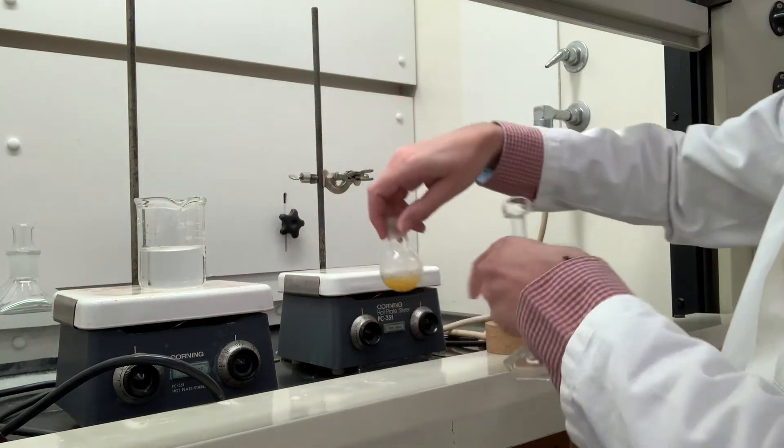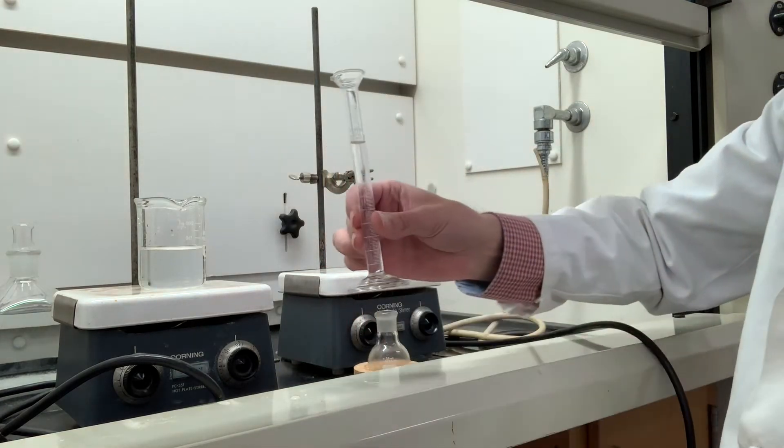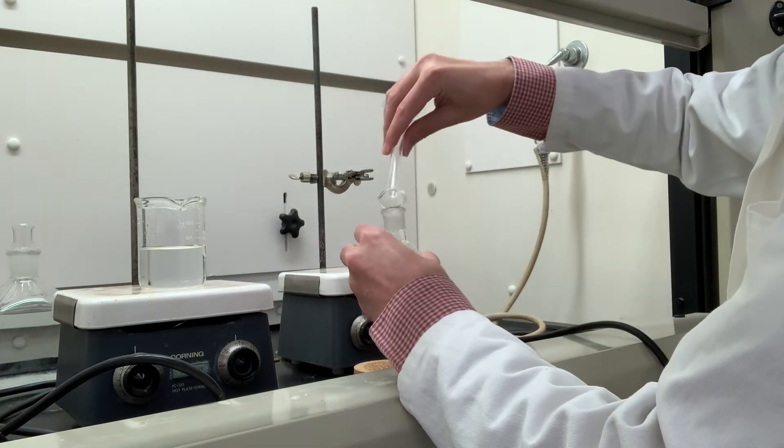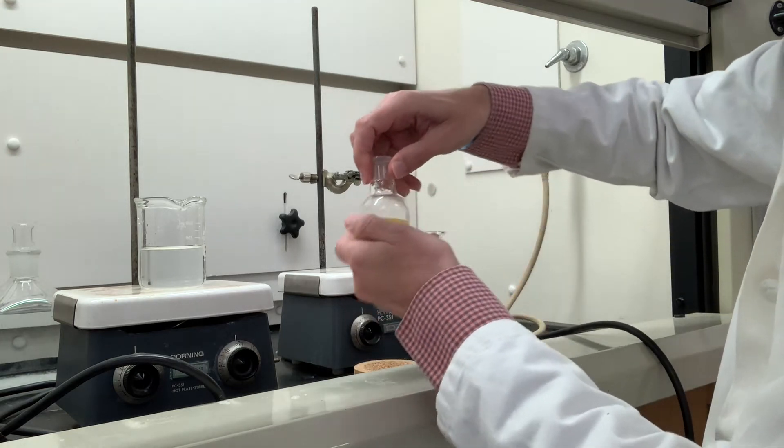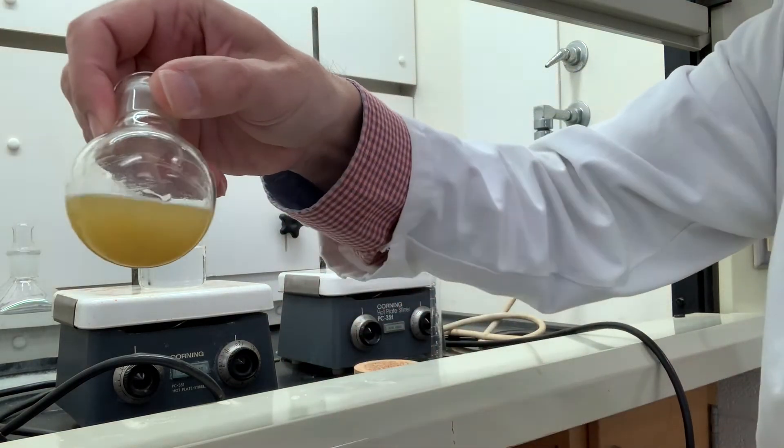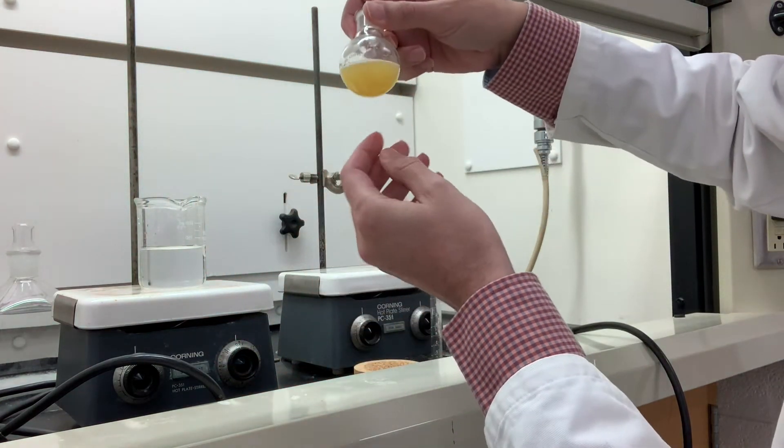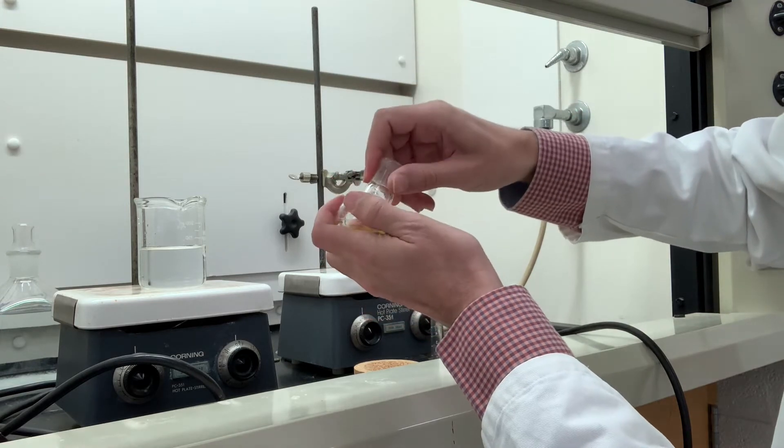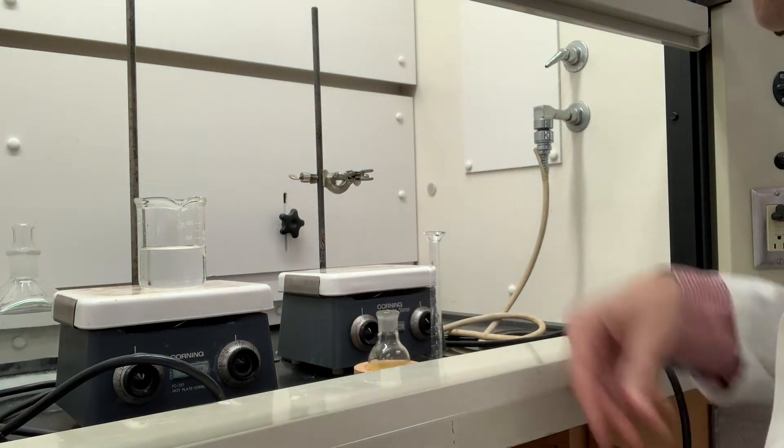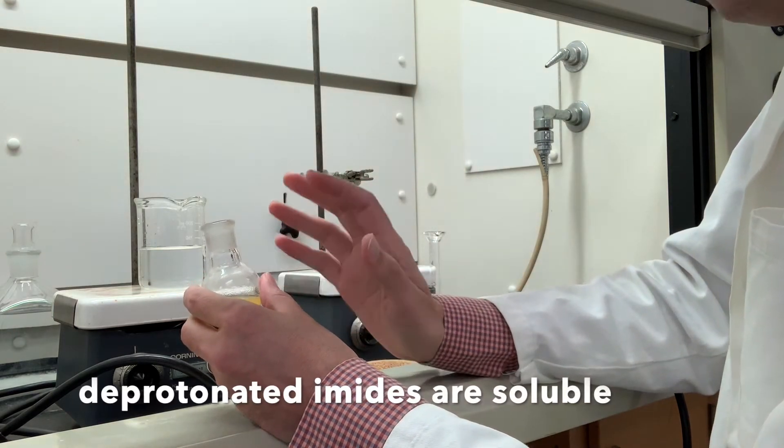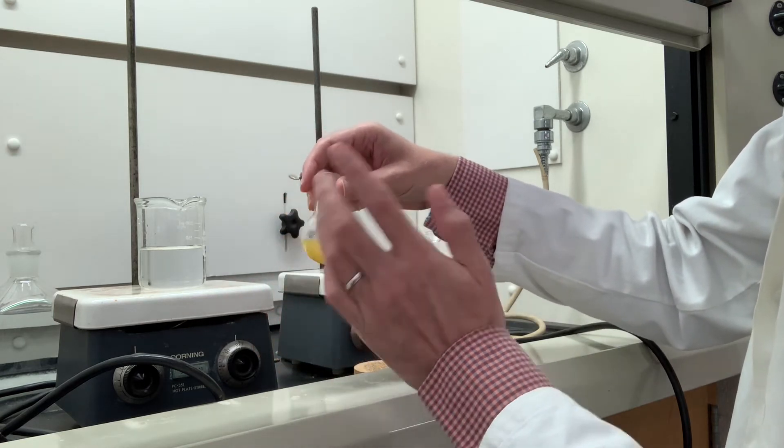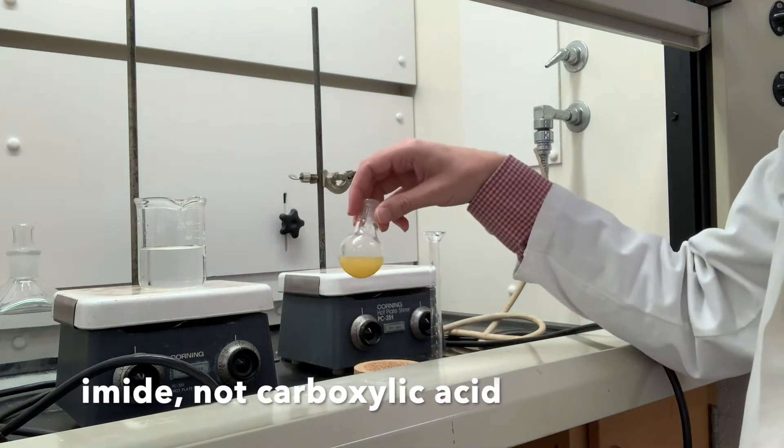Now that the reaction mixture is room temperature, we want to add 10 milliliters of distilled water. It's kind of cloudy with very small amounts of solid. Normally the procedure says to gravity filter the solids out. The product here is a carboxylate - the carboxylic acid is deprotonated in this very strongly basic sodium hydroxide reaction mixture, so any solid here is not the carboxylic acid, it's a byproduct. I'm going to set that up.